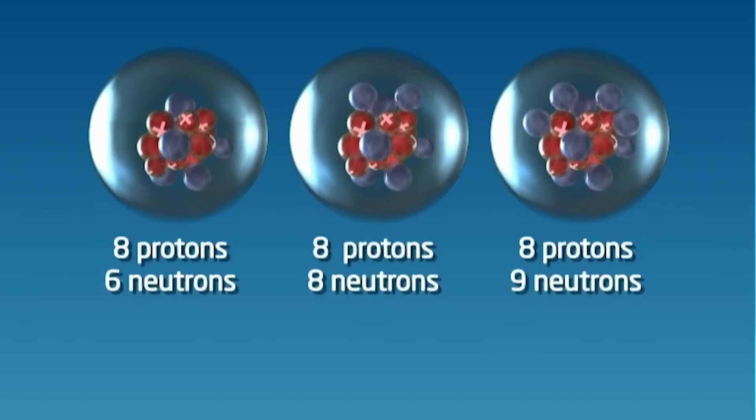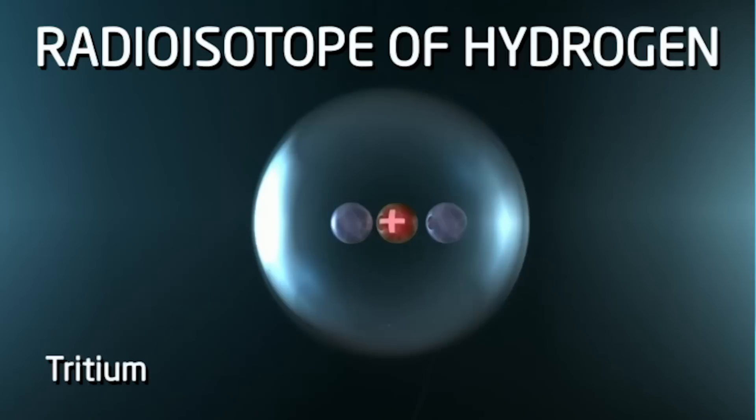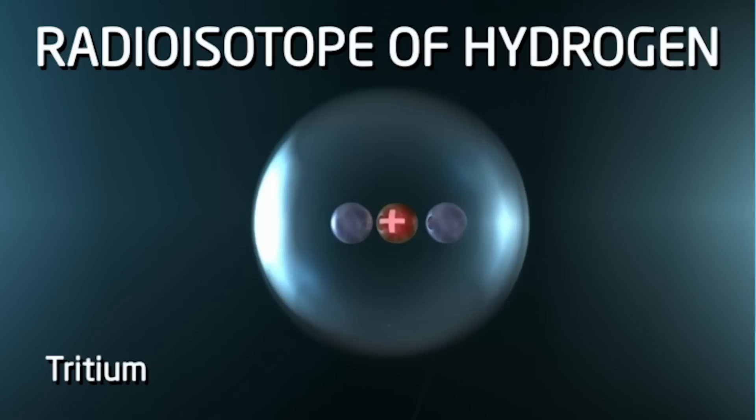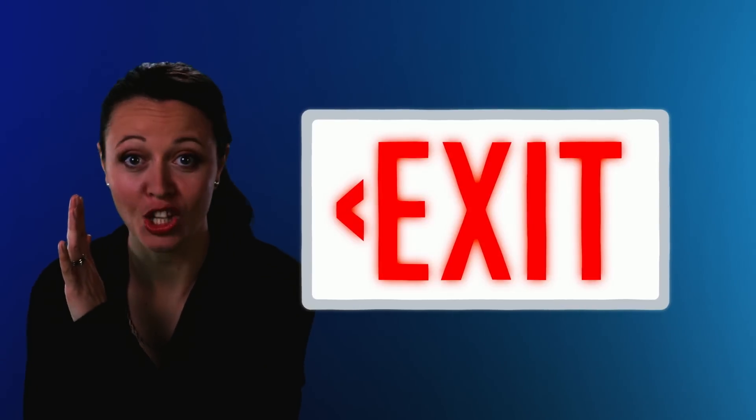An unstable atom is called a radioisotope. For example, two extra neutrons in a hydrogen atom creates the radioisotope tritium. That's the stuff that helps make exit lights glow in the dark.